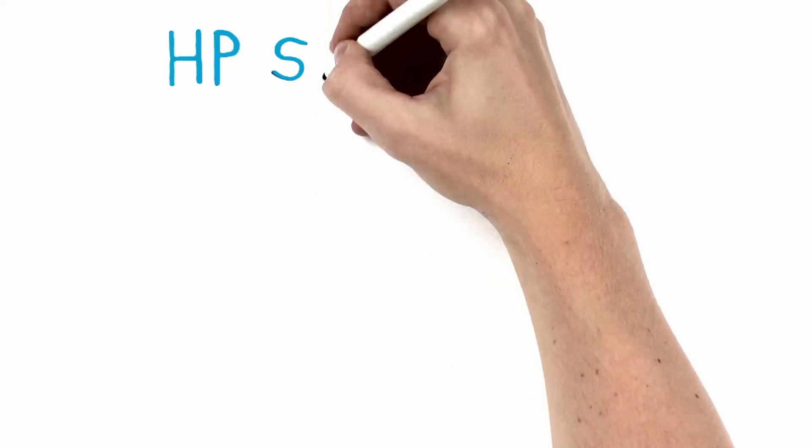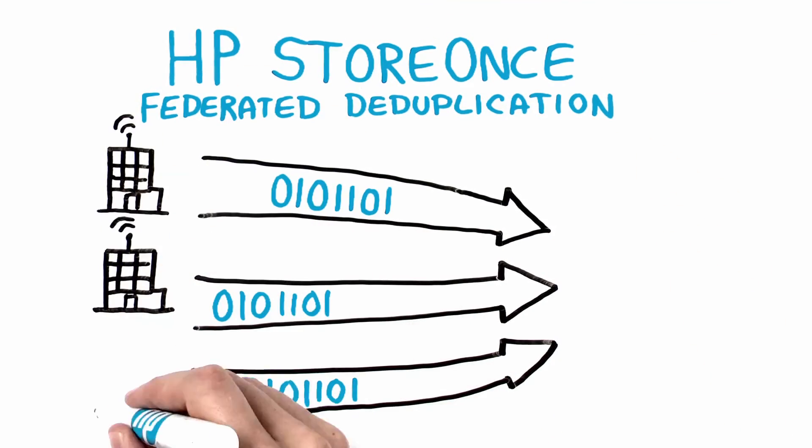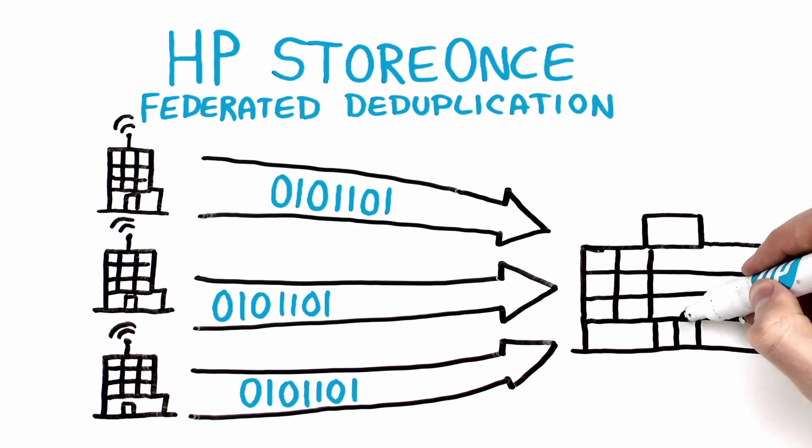With HP StoreOnce federated deduplication, data is efficiently transferred over low bandwidth from remote sites to the primary data center.